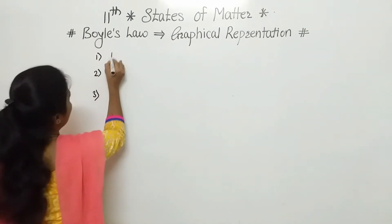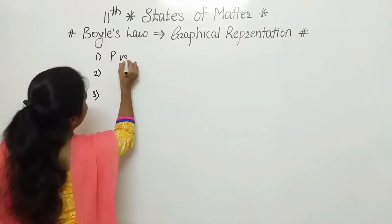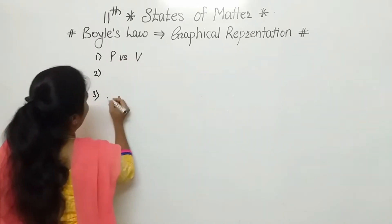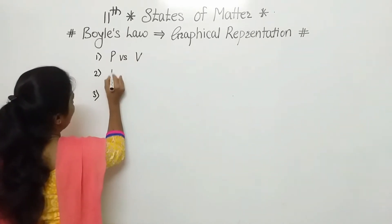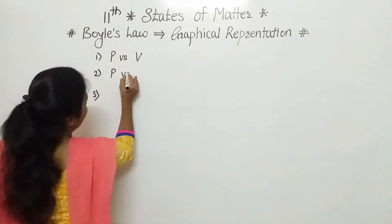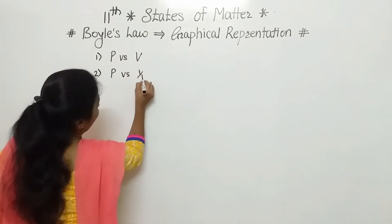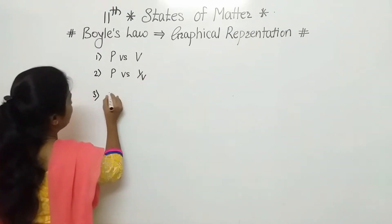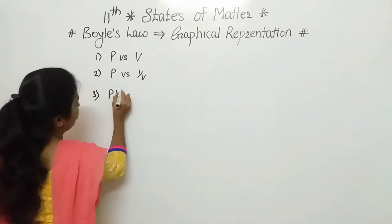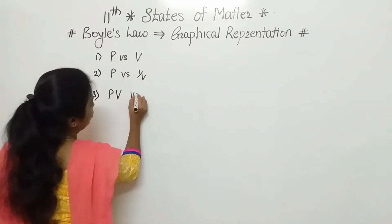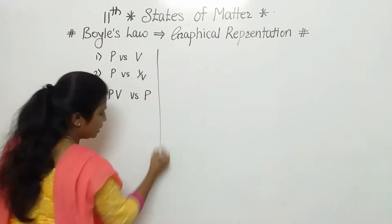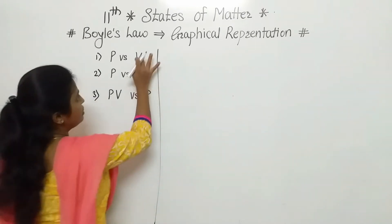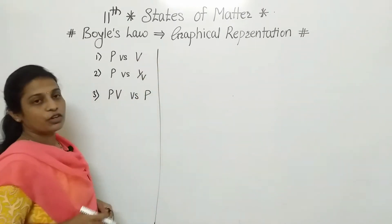The first graph is pressure versus volume. The second one is pressure versus 1/V. And the third one is pressure-volume versus pressure. So firstly we will discuss this first graph.